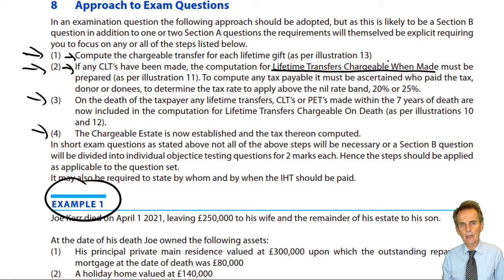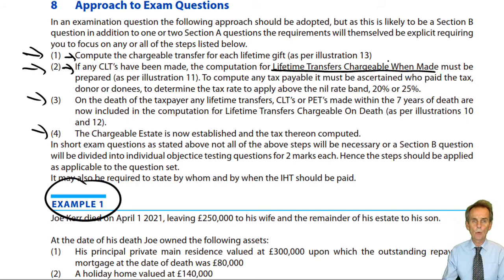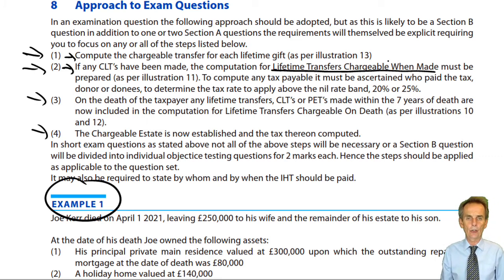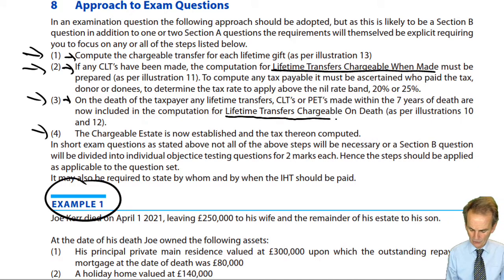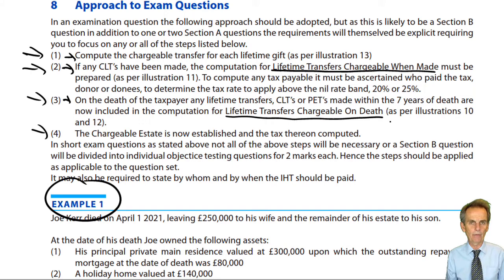We then pick up from that table any CLTs, which allows us to do our first IHT computation — the lifetime transfers chargeable when made. When dealing with that, we need to have identified not just the amount of the chargeable transfer that is the CLT, but also who is paying any tax thereon. Is it a net or a gross transfer — who is paying the tax? Net transfer if the donor pays; gross transfer if the trustees pay. We then get to inevitably what will have happened within such a question: the death of the taxpayer, which requires two further computations.